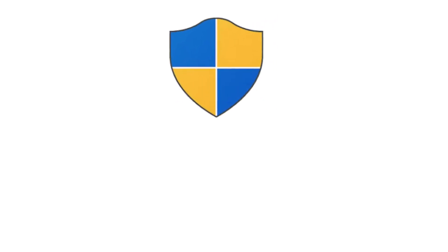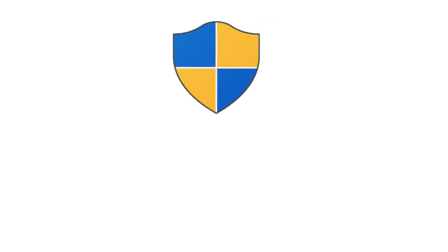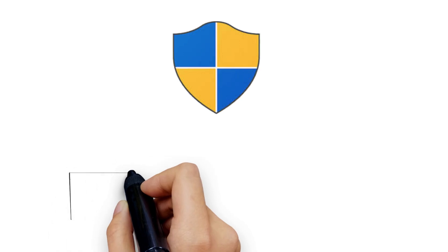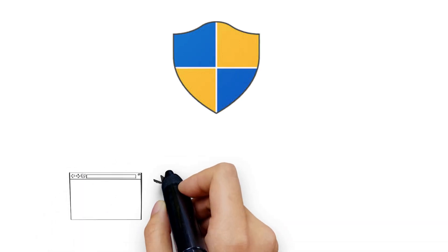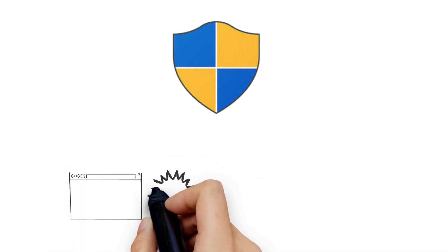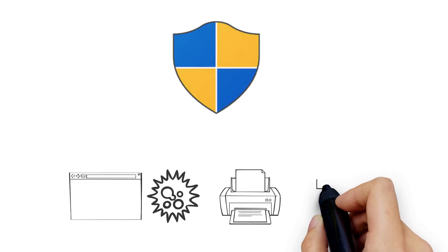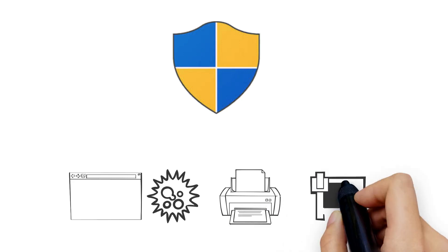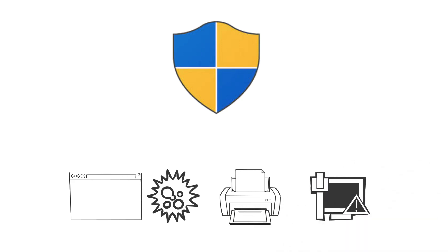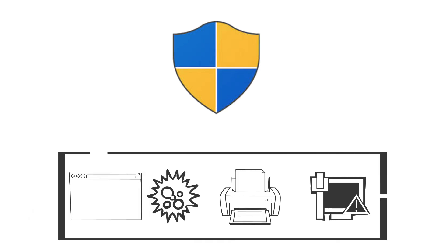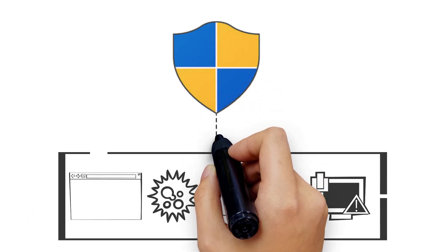UAC is a long-standing security feature in Windows that helps prevent unauthorized changes. It sets levels of user authorization within the operating system that are designed to limit the ability of malicious code to execute with administrator privileges.